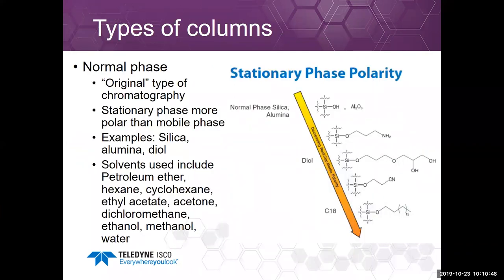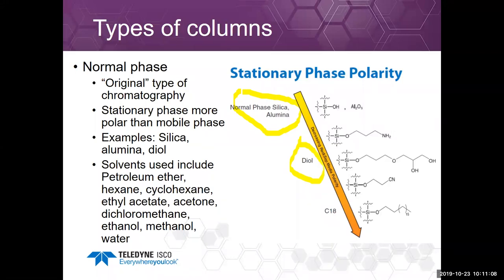Types of columns include normal phase, the original type of chromatography. The stationary phase is much more polar than the mobile phase. Examples include silica, alumina, and diol — which can be run as normal phase — and solvents include petroleum ether, hexane, cyclohexane, ethyl acetate, and going all the way up. You can even run water on normal phase, which is called aqueous normal phase or HILIC.